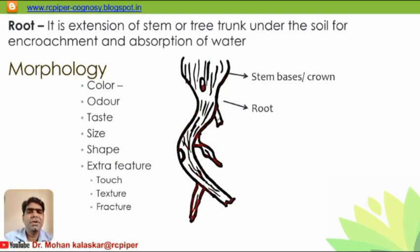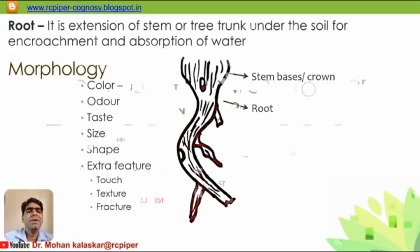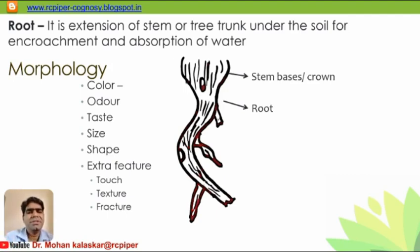The extra features generally studied include touch, texture, and fracture. Other characteristics may also be there, such as exfoliating or having specific markings over the surface. The root has a stem base or crown at the top where microscopic structures are different and from where rootlets do not emerge. Rootlets, when torn off, produce pits on the root surface, and small rootlets come out at various points.